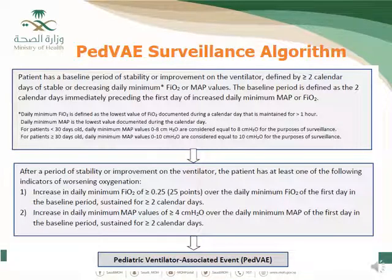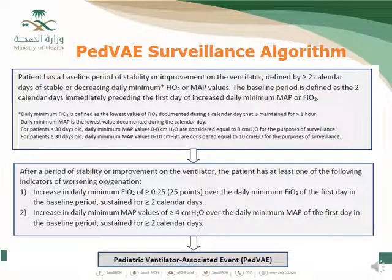This is the summary of the Pediatric VAE surveillance algorithm. You have two days of stability or improvement of oxygenation, followed by two days of worsening of oxygenation. The key difference is we are using MAP instead of PEEP, and the values used for detecting worsening of oxygenation are not the same as in the adult VAE.